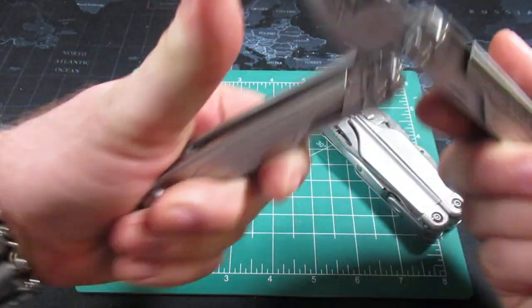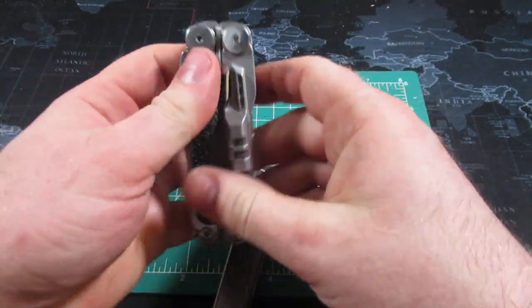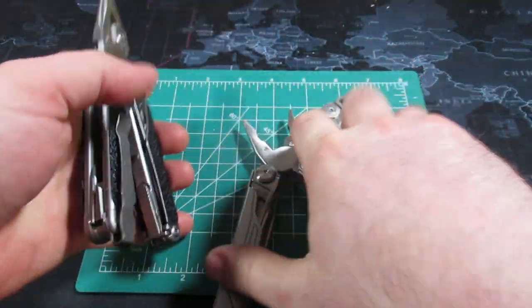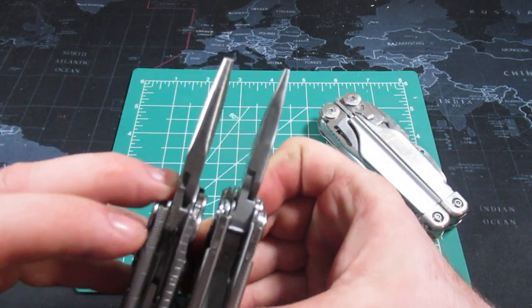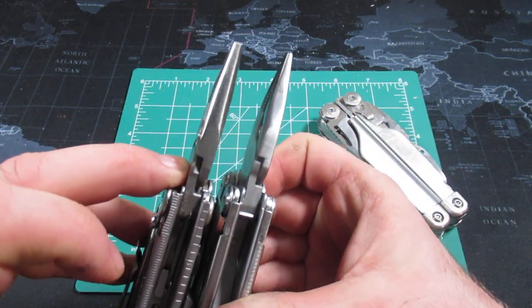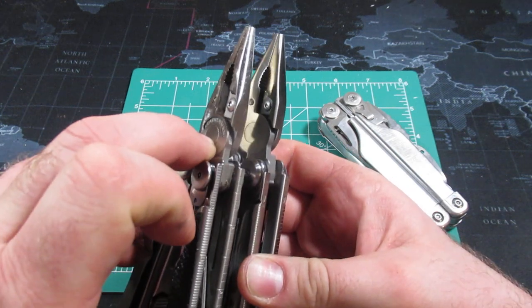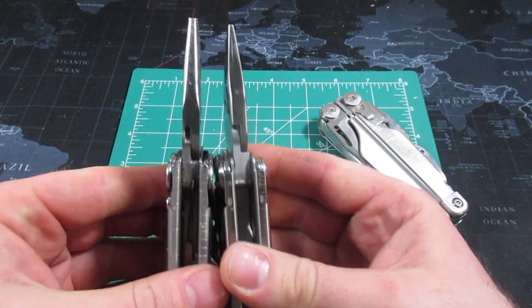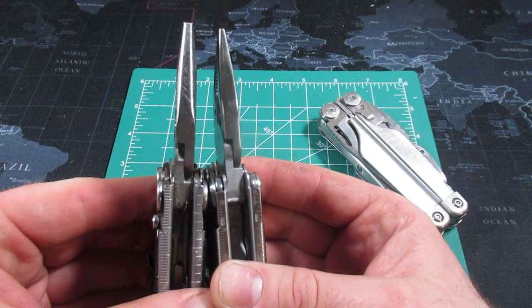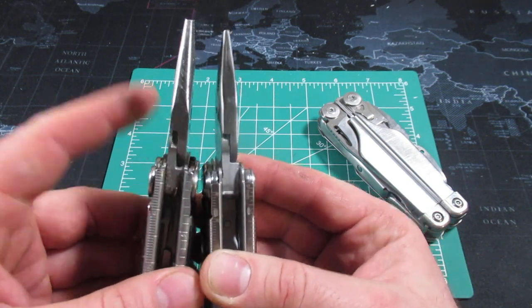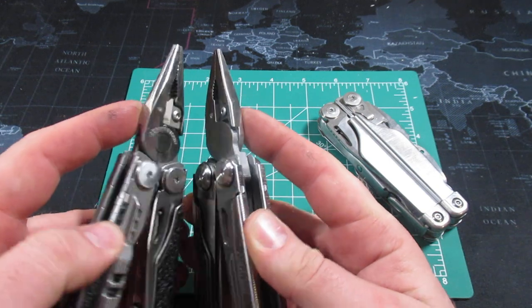Now when you open up the Nextool Captain, that is when it gets interesting because it is essentially the same exact size as the Leatherman Wave. My Wave has been shortened a bit, so it's essentially the same size, and it's even got a similar plier head. You can see where the plier heads are fairly similar in thickness.